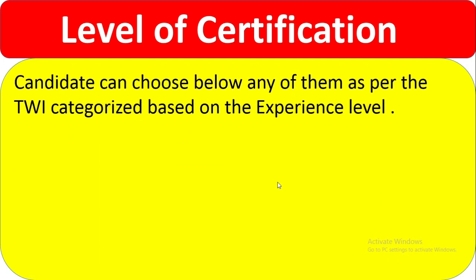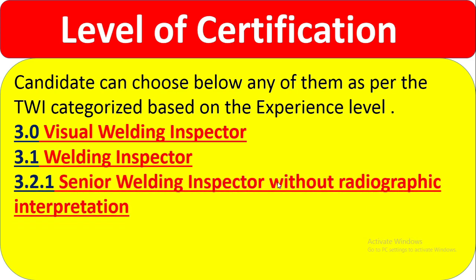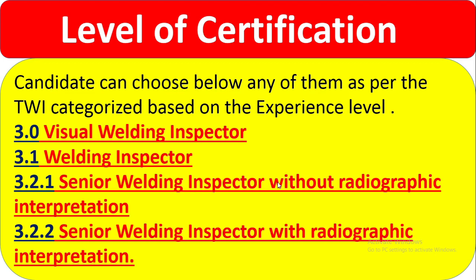Level of certification: candidates can choose any of the following based on their experience level. CC 3.0 is visual welding inspector; CC 3.1 is welding inspector; CC 3.2.1 is senior welding inspector without radiographic interpretation; and CC 3.2.2 is senior welding inspector with radiographic interpretation. Based on your experience level you can choose the appropriate level. Each level has specific requirements mentioned in the CSWIP book.